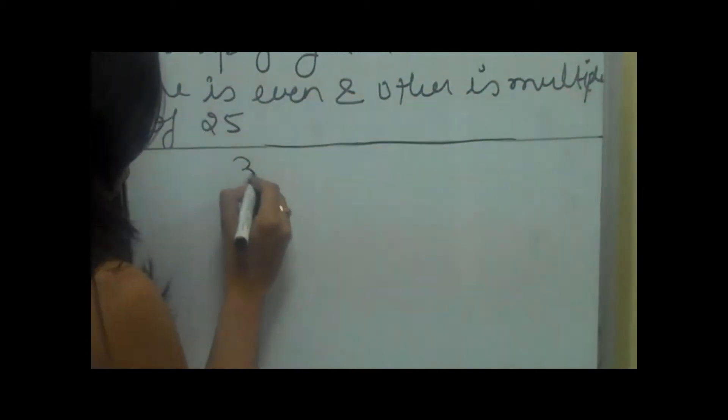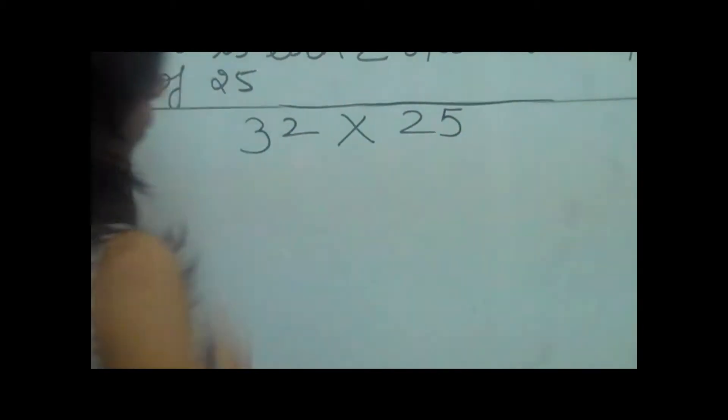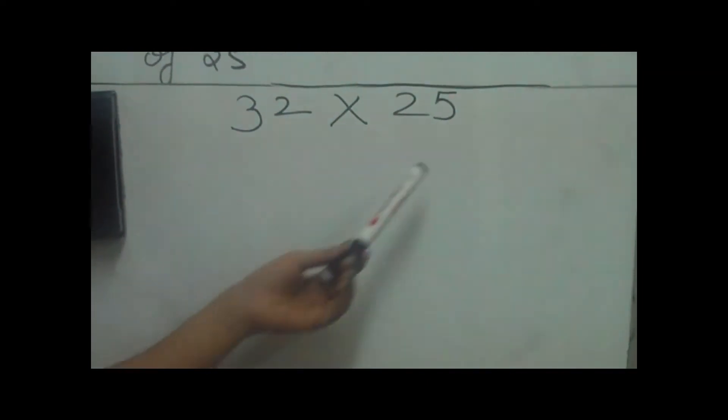Let's take an example. Let's multiply 32 by 25. What we will do is divide the even number by 2 and multiply the other number by 2.